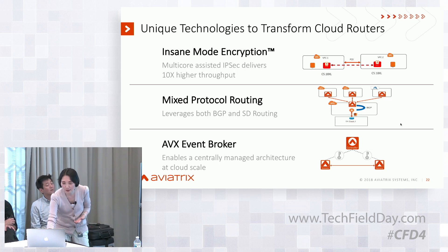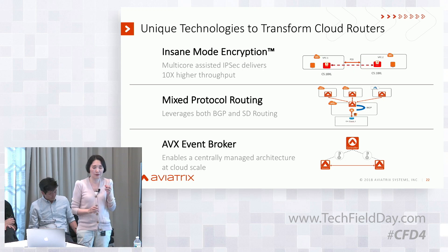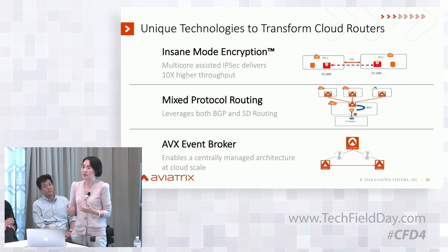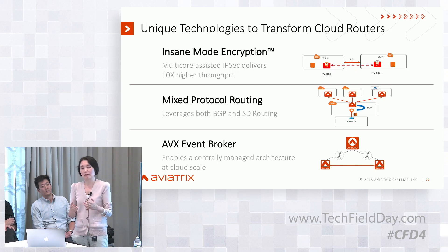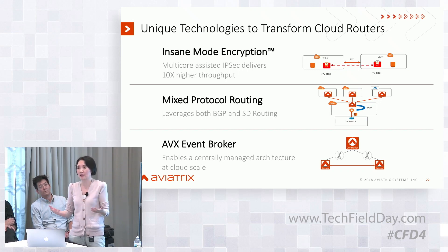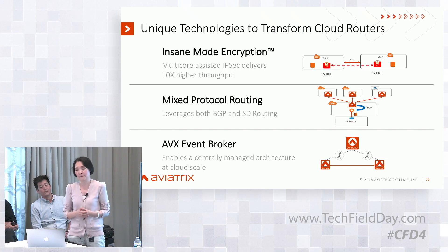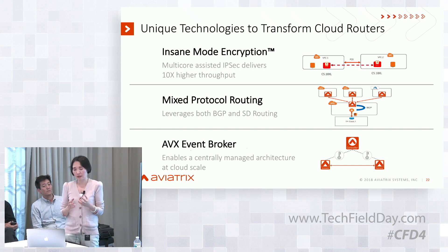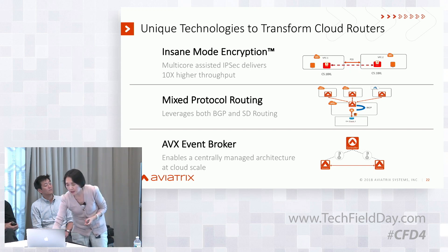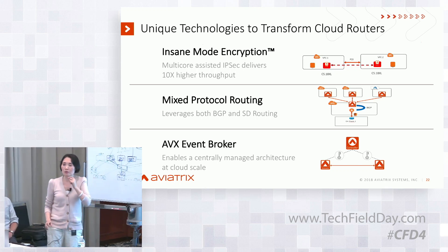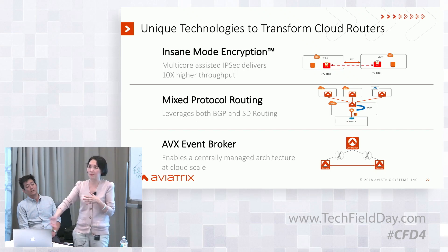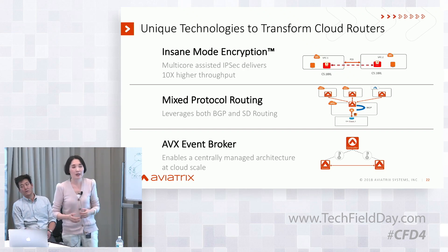The second technology is mixed protocol routing. Traditional routers all run BGP — that's how the internet works when you don't have a centralized authority, for distributed systems to exchange route data. Or you have so-called SDN where you rip and replace everything, which is very costly and complex to manage. We run BGP in our transit to VGW because on-prem talks BGP — on-prem MPLS — if you don't talk BGP you can't even talk to on-prem.